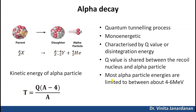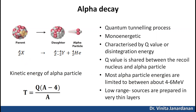Most alpha particle energies are limited to between about 4 to 6 mega electron volts. Because alpha particles lose energy rapidly in materials, alpha particle sources are prepared in very thin layers.